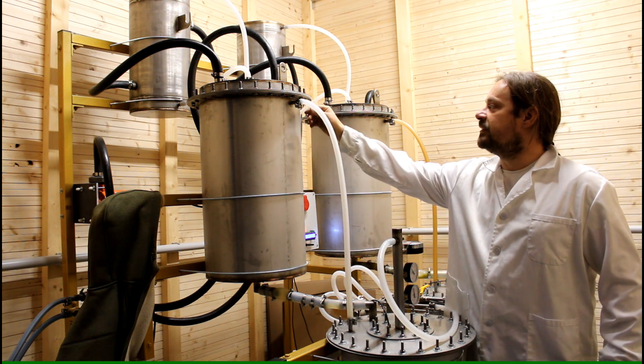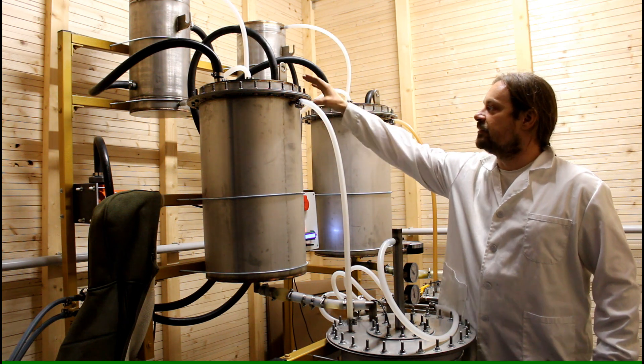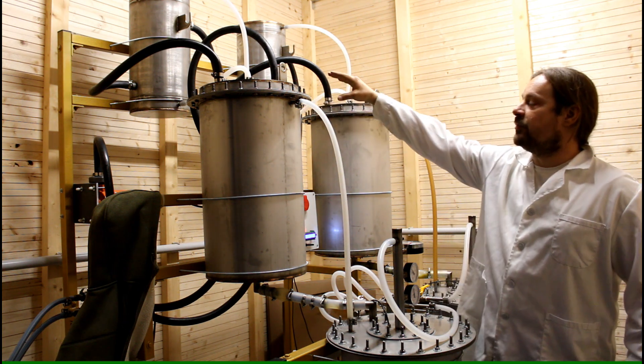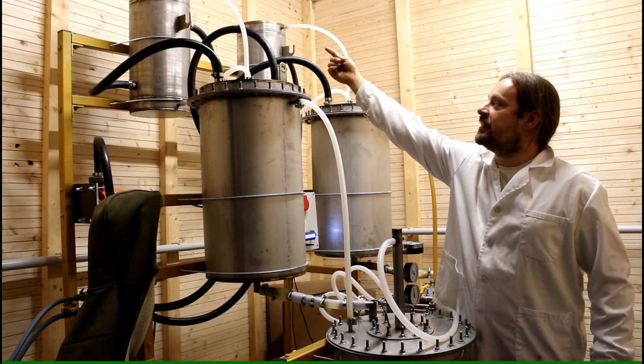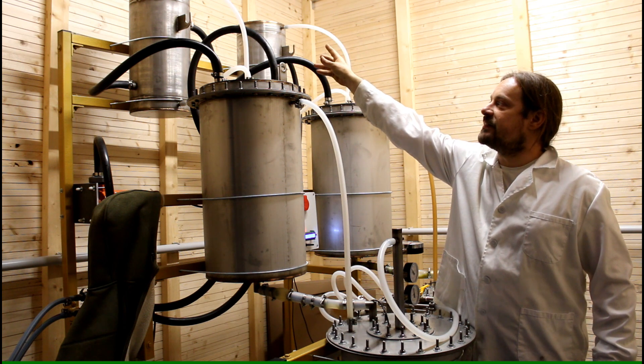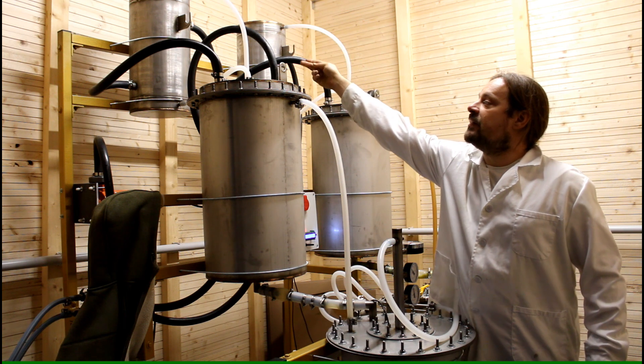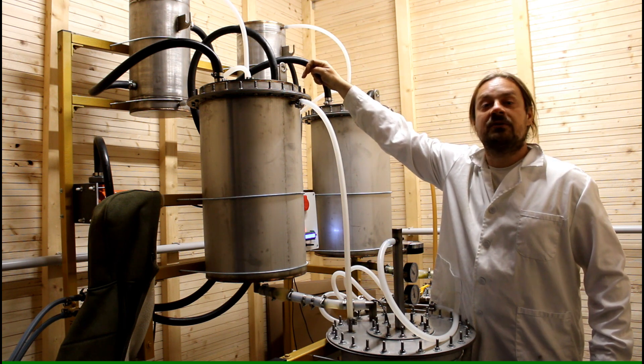And what happens next is that the solvent will be heated up. When the solvent starts to evaporate the steam will come up here in this tube and start condensing on this lid here. And whatever does not condense here will go to the second stage to the second condenser, will condense there and run down onto the herbs.